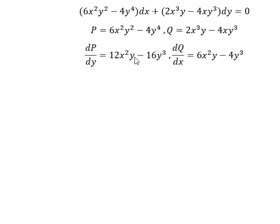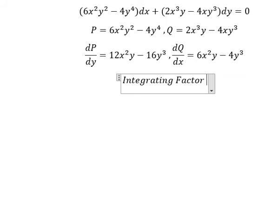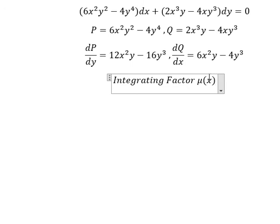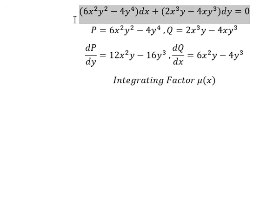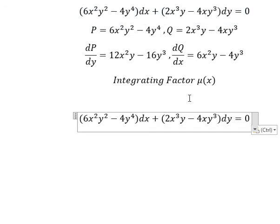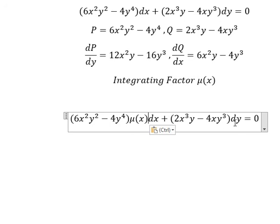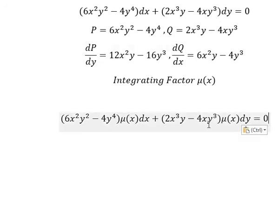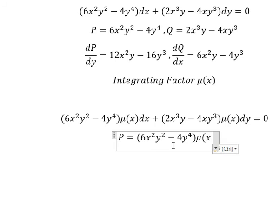If we look carefully, they are not the same, so I will create an integrating factor and I will choose μ(s). That means inside the integrating factor it should contain s. We multiply both sides by μ(s). Now I will set up P equals to this one and Q equals to this one.